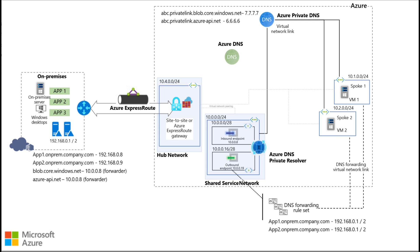This is an architecture diagram that Microsoft shares on utilizing the Azure Private DNS Resolver. This is for all the DNS routing that you want without the need of having a DNS server — you can use this PaaS service to resolve all your DNS.